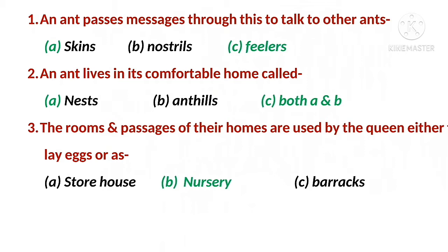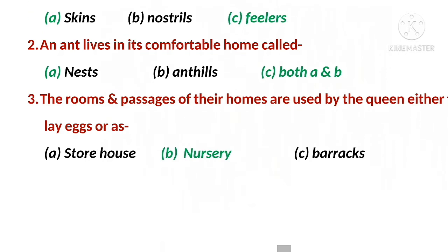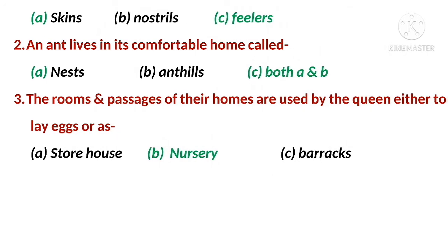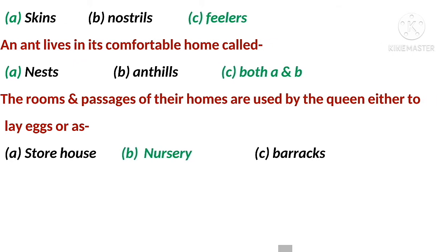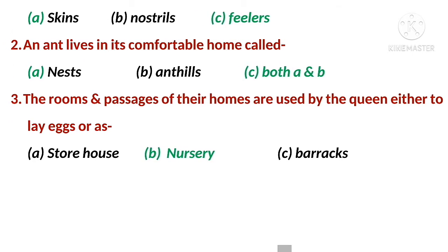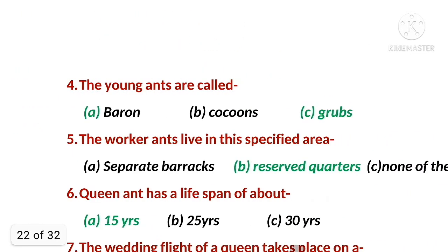MCQ 2 answer is both A and B - A is 'nest' and B is 'anthill.' MCQ 3: The rooms and passages of their homes are used by the queen either to lay eggs or as nursery. The right option is B - nursery.